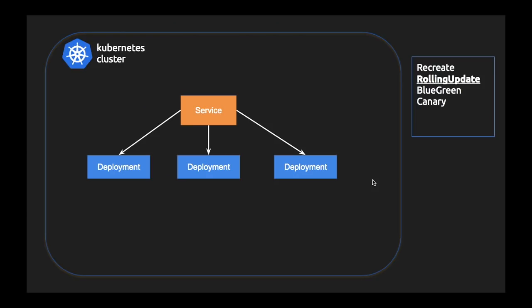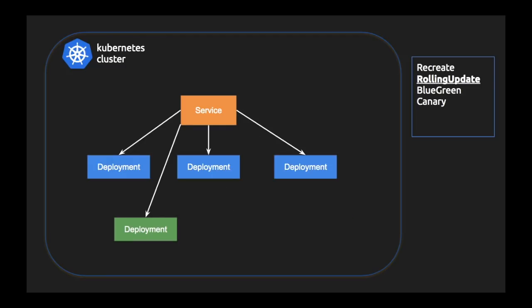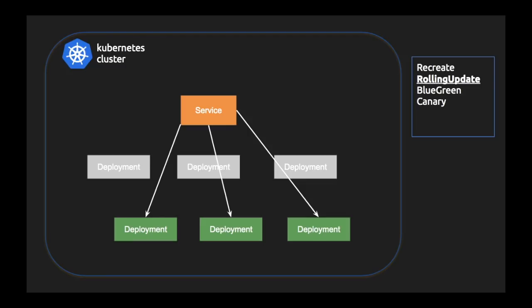Now let's look at rolling update. Rolling update is when you want to deploy a new version of your deployment without any downtime. A new pod will be created, and once the new pod is up and running and ready to serve, the old one will be destroyed. The same thing happens for all replicated instances inside the deployment. To summarize: a new instance is created, and once it is up and ready, the link switches to the new instance and then the old instance gets destroyed.